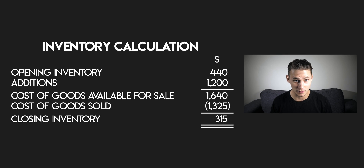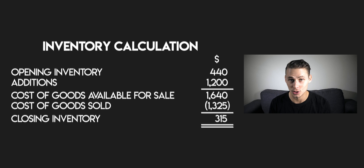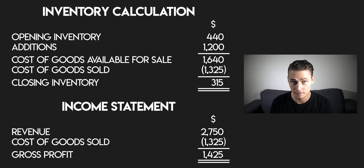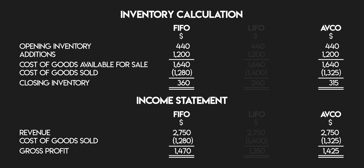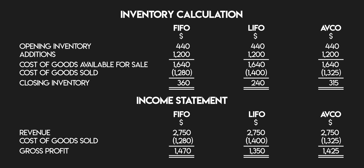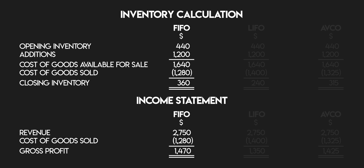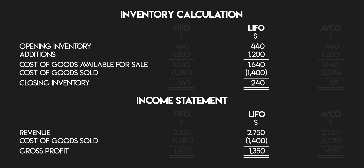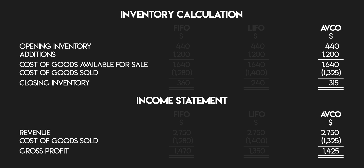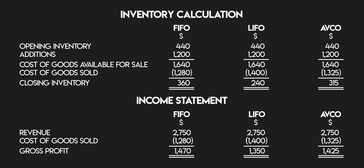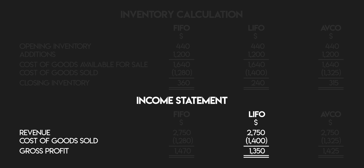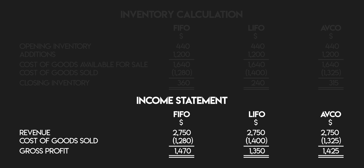But what are the implications of using the weighted average cost method? AVCO matches your current revenues against your average cost of goods — it's like the middle ground between the first in first out and last in first out methods. FIFO matches your current revenues against your older cost of goods, whereas LIFO matches your current revenues against your most recent cost of goods. AVCO falls somewhere in the middle. For example, during times of inflation where cost prices are rising, your cost of goods sold under LIFO tend to come out the highest because it reflects your most recent purchases, and your cost of goods sold under FIFO would come out the lowest because this assumes you're selling off your older, cheaper inventory first. With the average cost method, your results come out somewhere in the middle.